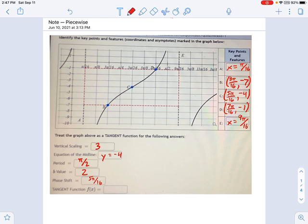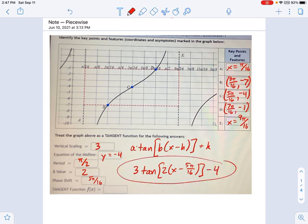So now I'm ready to write the tangent function. And if you remember the standard form, it goes like this. You have your vertical scaling factor times the tangent of some horizontal scaling b times x minus the phase shift h plus the midline k. So if we put everything together, now we're going to have 3 times tangent of b is 2, x minus phase shift is 5 pi over 16, and then k is negative 4. So this is our tangent function. And that's the way you build these things.